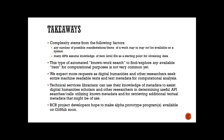Furthermore, many APIs assume knowledge of item level or manifestation level IDs as a starting point for actually obtaining data. This type of automated known-work search to find or explore any available item for computational purposes is not yet very common, but we expect more requests as digital humanities and other researchers seek entire machine-readable text and text metadata for computational analysis.